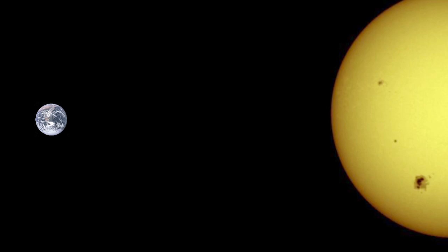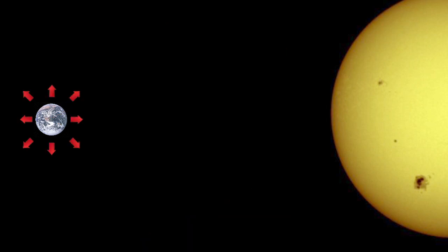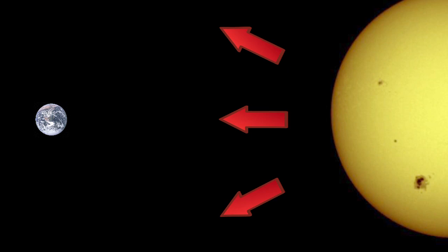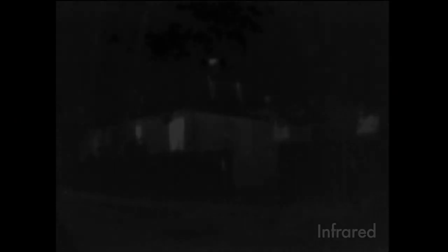Thermal radiation is also how the earth cools itself, radiating energy into space in order to maintain a relatively steady temperature. Thermal radiation has a number of purposes both on the personal and the planetary scale. Understanding how it works provides a number of opportunities to help people conserve energy and improve the environment.